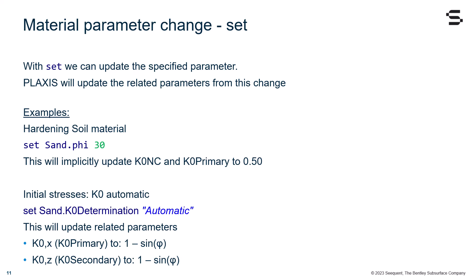For initial stresses, with regards to the K0, we can say set Sand.K0Determination to automatic, and this will update related parameters such as the K0.x (K0Primary) to 1-sin(φ), and K0.z (K0Secondary) to 1-sin(φ).